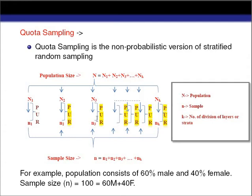This is the main difference between stratified random sampling and quota sampling. Quota sampling is a non-probabilistic sampling whereas stratified random sampling is a probabilistic sampling. There are also situations where we use quota sampling — for example, when we don't have a sufficient amount of cost to conduct our study.